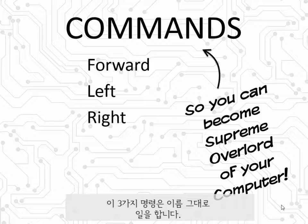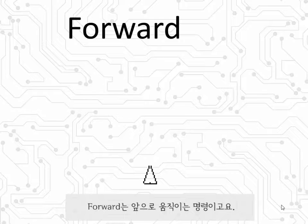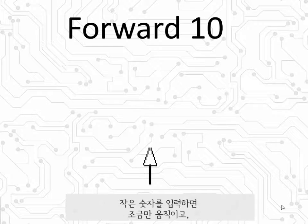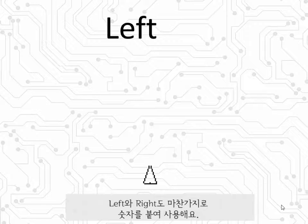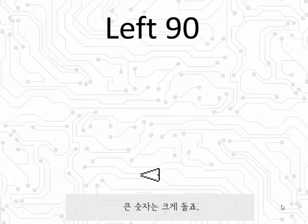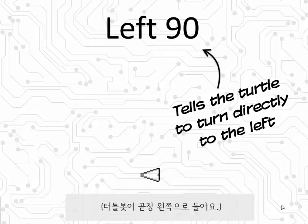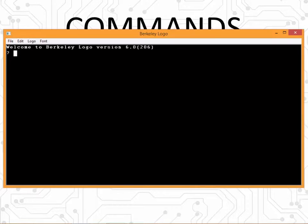These commands pretty much do what they sound like they do. When you use them, you've got to give each one a number. For forward, the number tells the turtle how many steps to move forward. If you give it a small number, it'll move forward just a little bit. If you give it a big number, it'll move forward a lot. In the same way, left and right also need numbers, but these numbers tell the turtle how far to turn. A small number and the turtle will just turn a little bit; a big number and the turtle is going to turn a lot. So these are our first three commands.